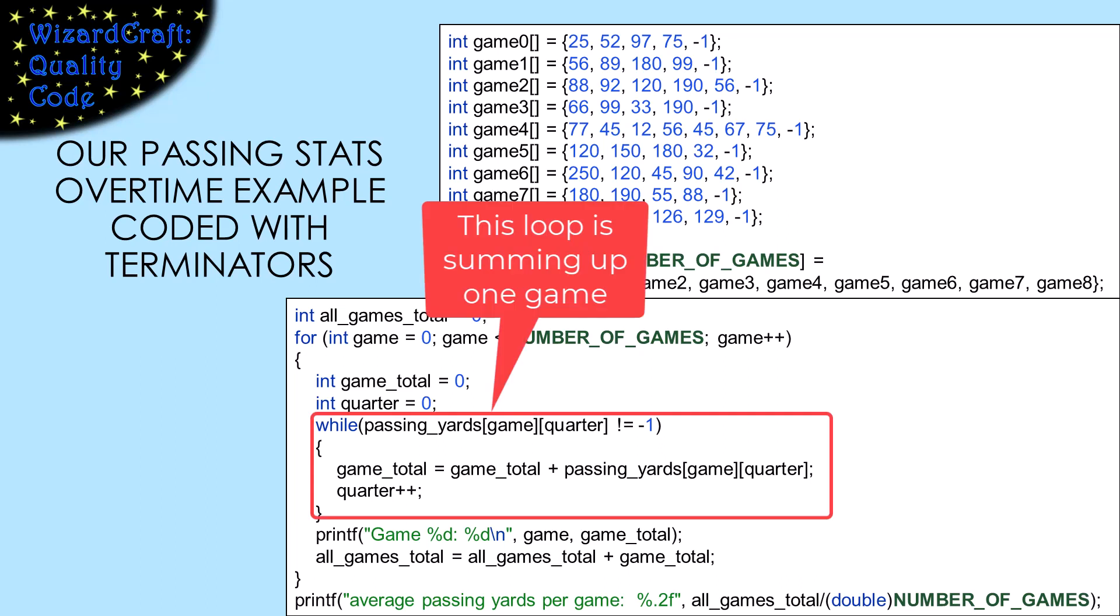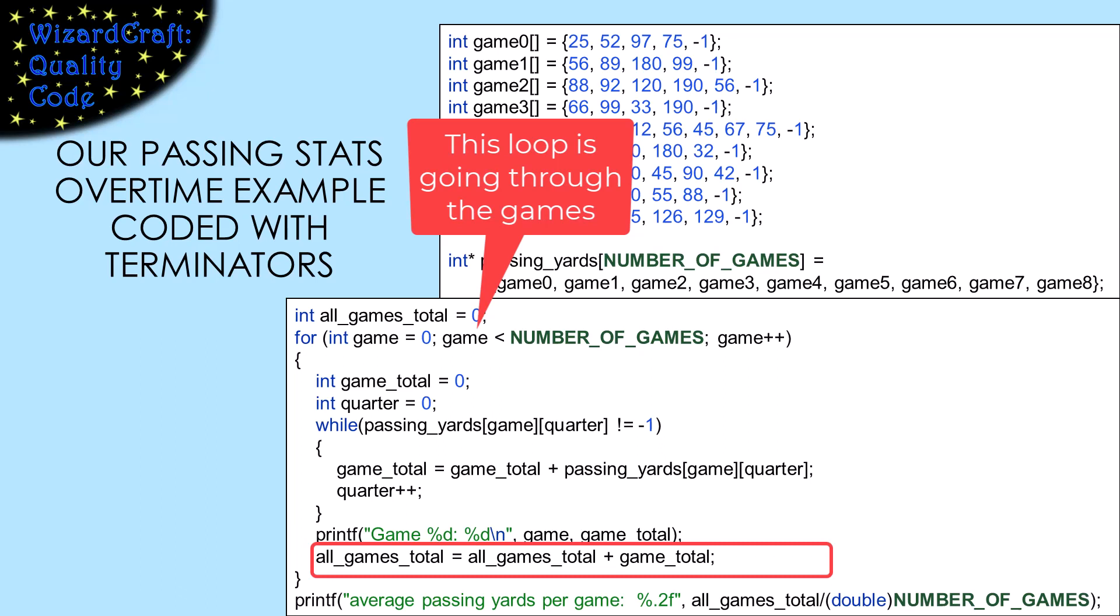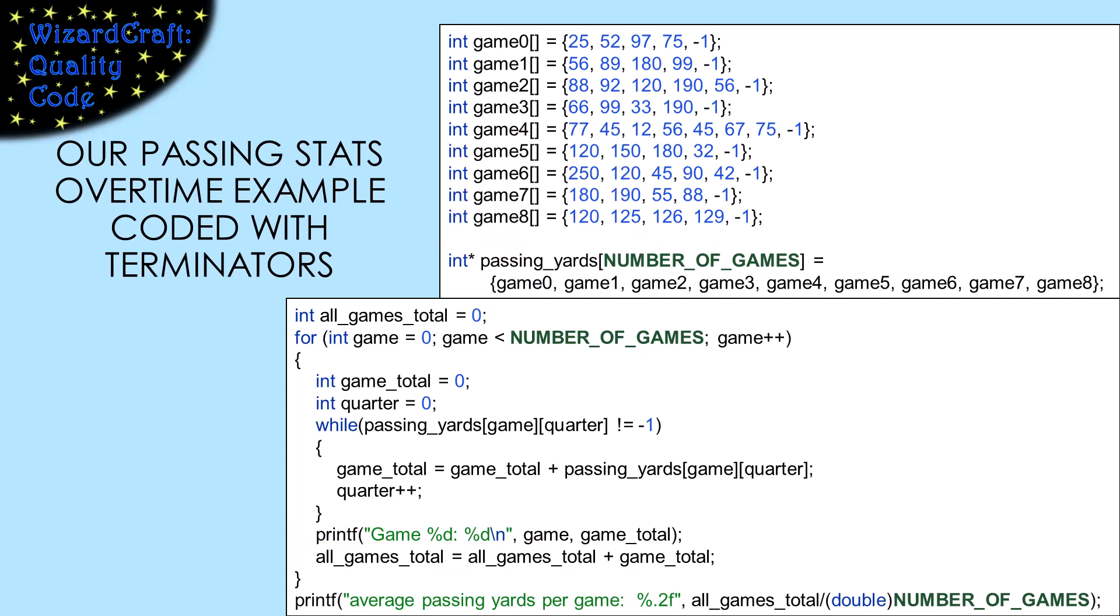This code will compute the total passing yards in each game, and then sum them up to get an average passing yards per game. The inner loop is summing up each row. Notice that I've coded it as a while loop, because now it's a sentinel-controlled loop. We're going until we see the negative one. The outer loop is the same as it was for rectangular arrays, a count-controlled loop walking down the array of arrays to get to each row.